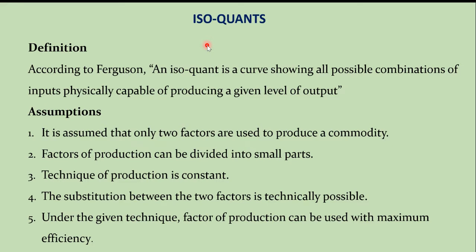Before explaining the concept of isoquants, I would like to recall what we studied in the second chapter. In the second chapter, we studied about consumption analysis and we also saw about indifference curves. An indifference curve is the locus of all combinations of commodities from which the consumer derives the same level of satisfaction. Indifference curve is also called as iso-utility curve. In consumption analysis, we studied about the behavior of consumers and the satisfaction of consumers' wants.